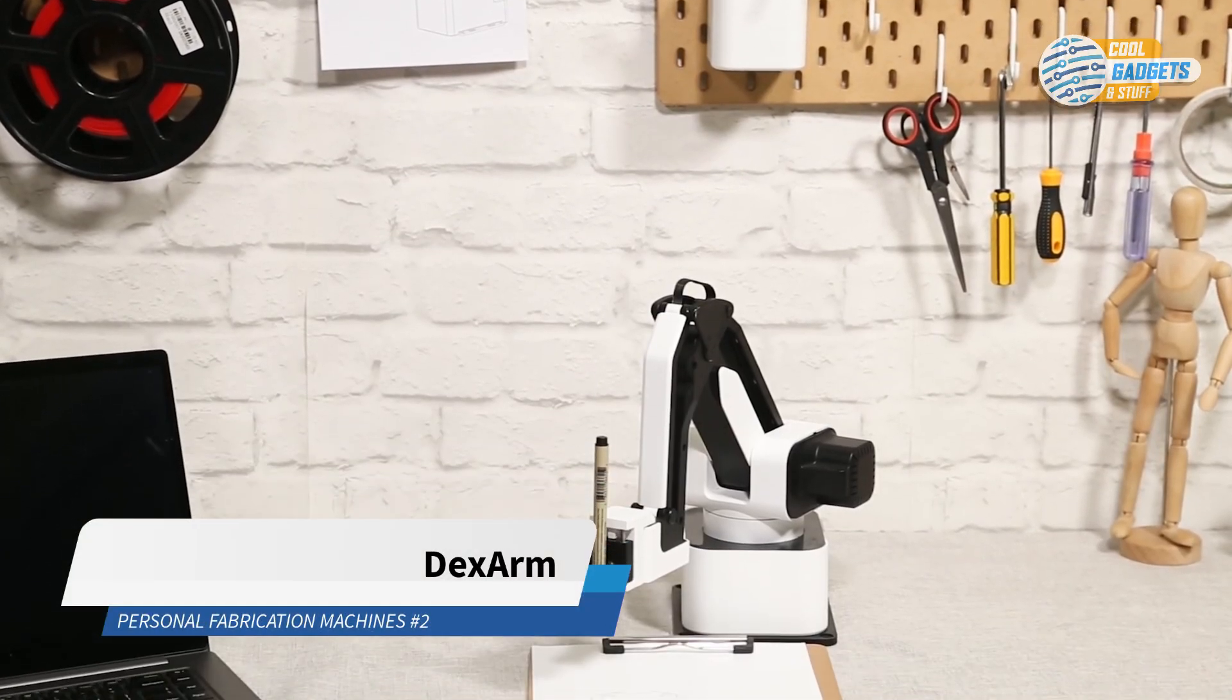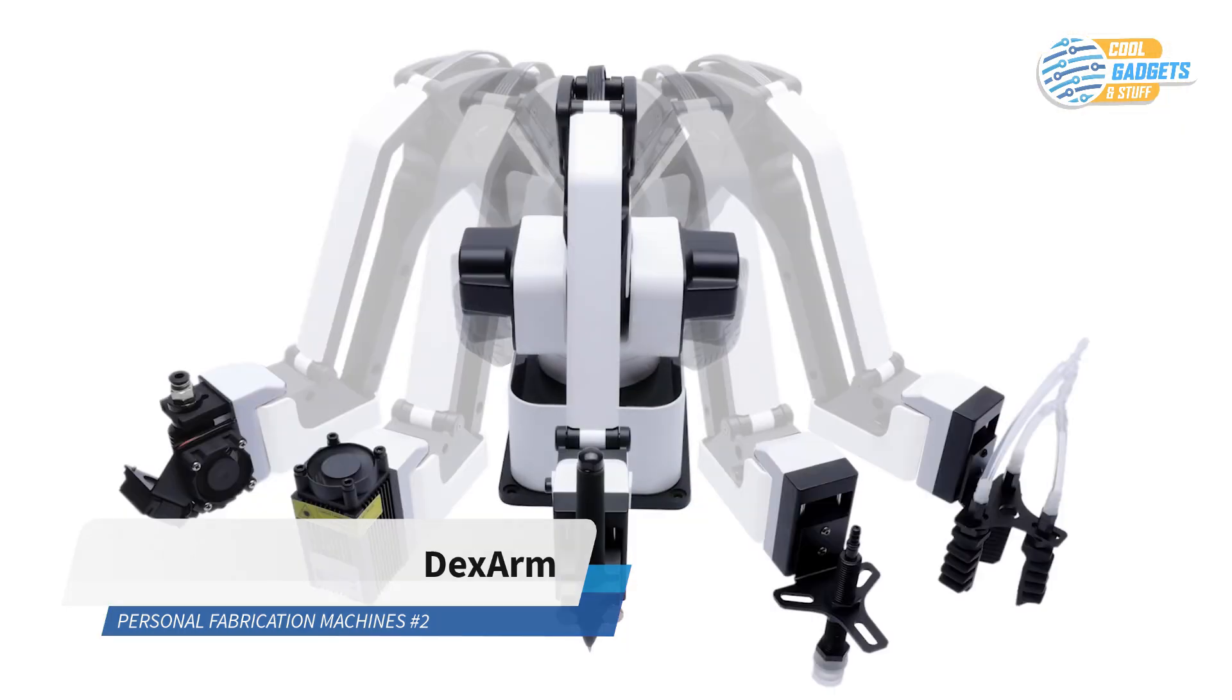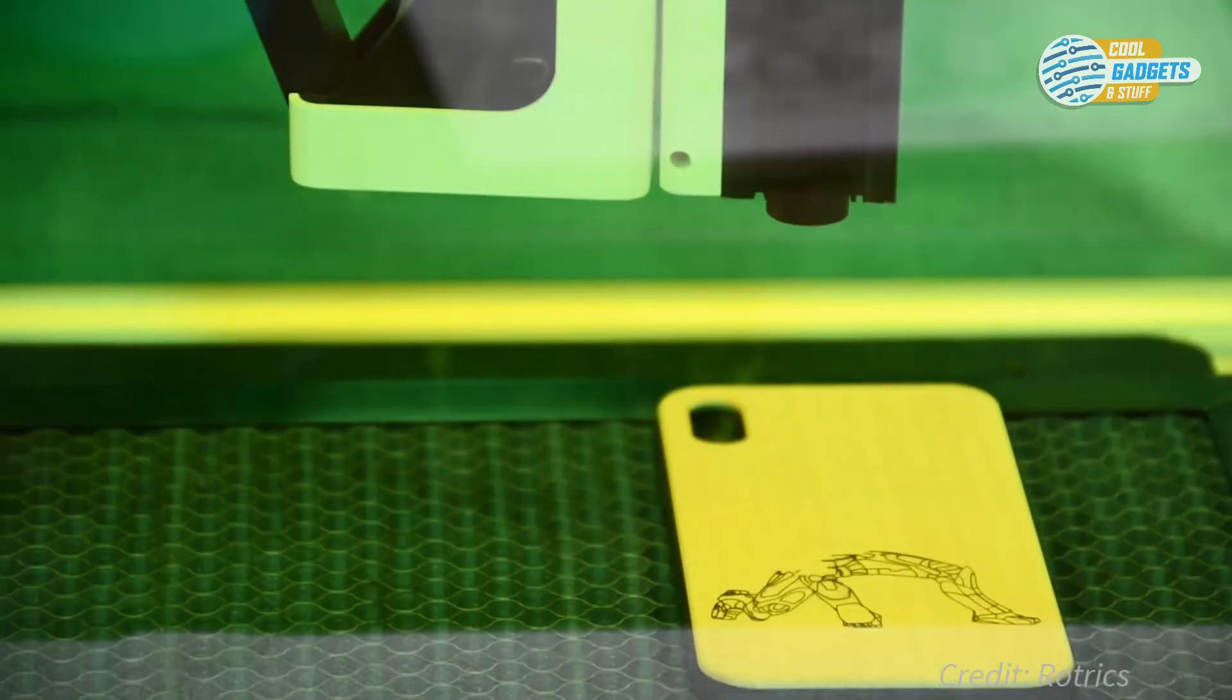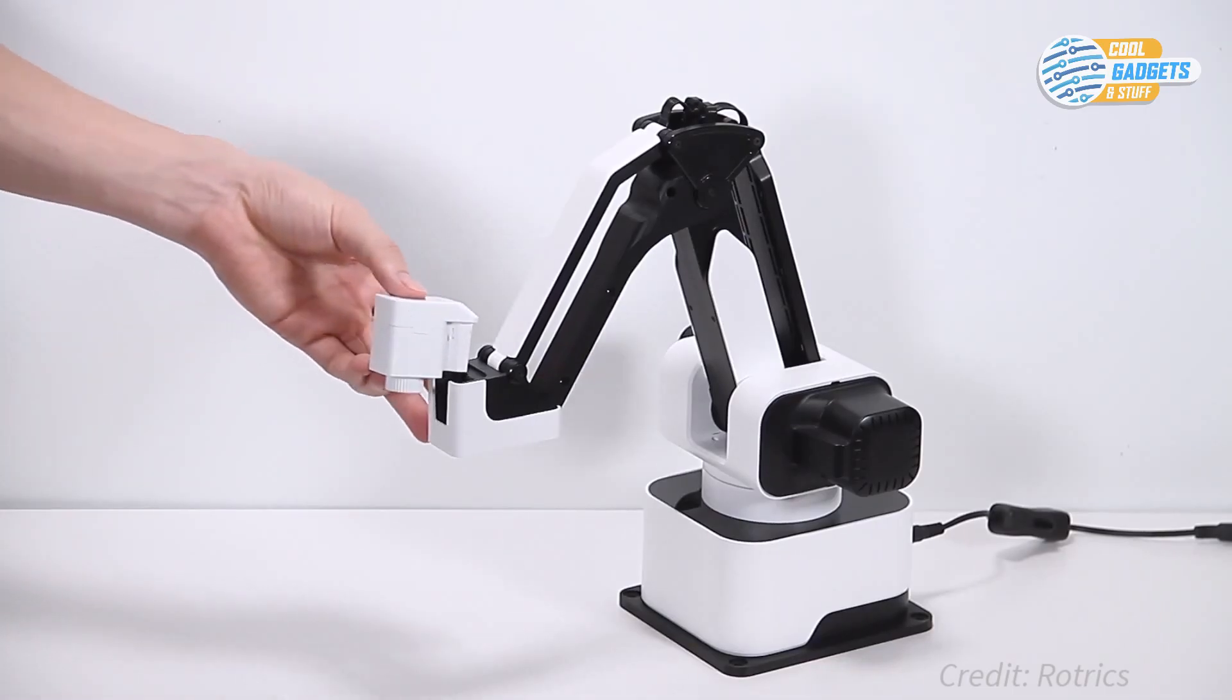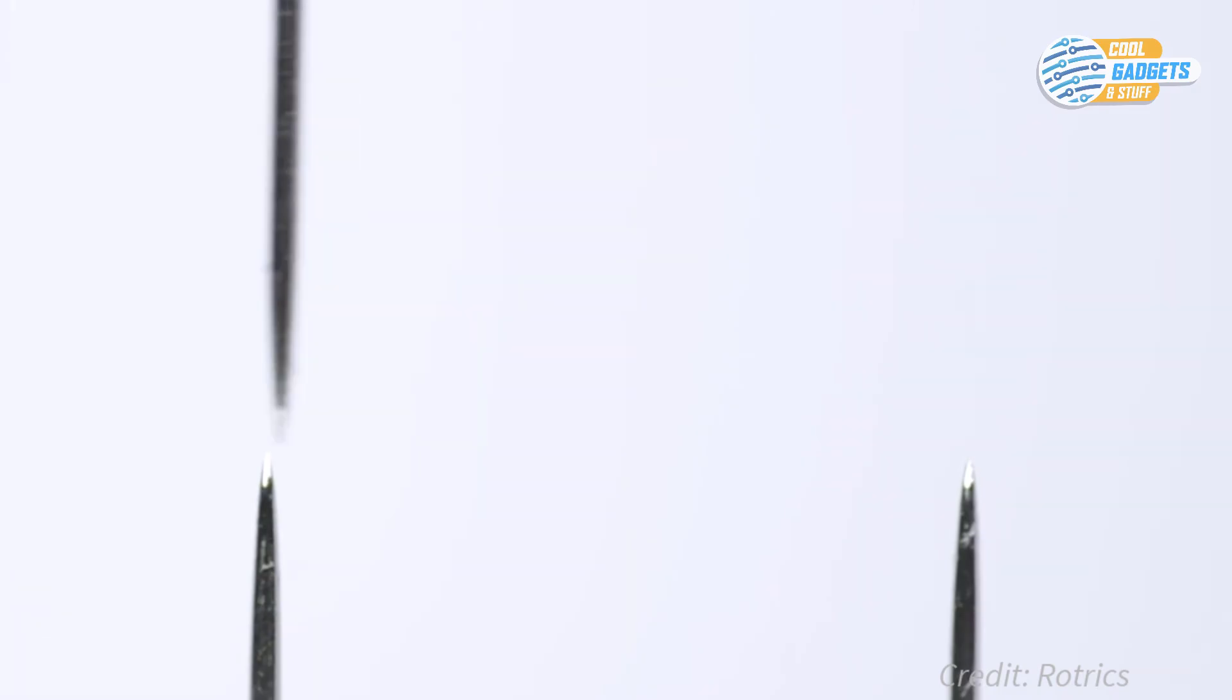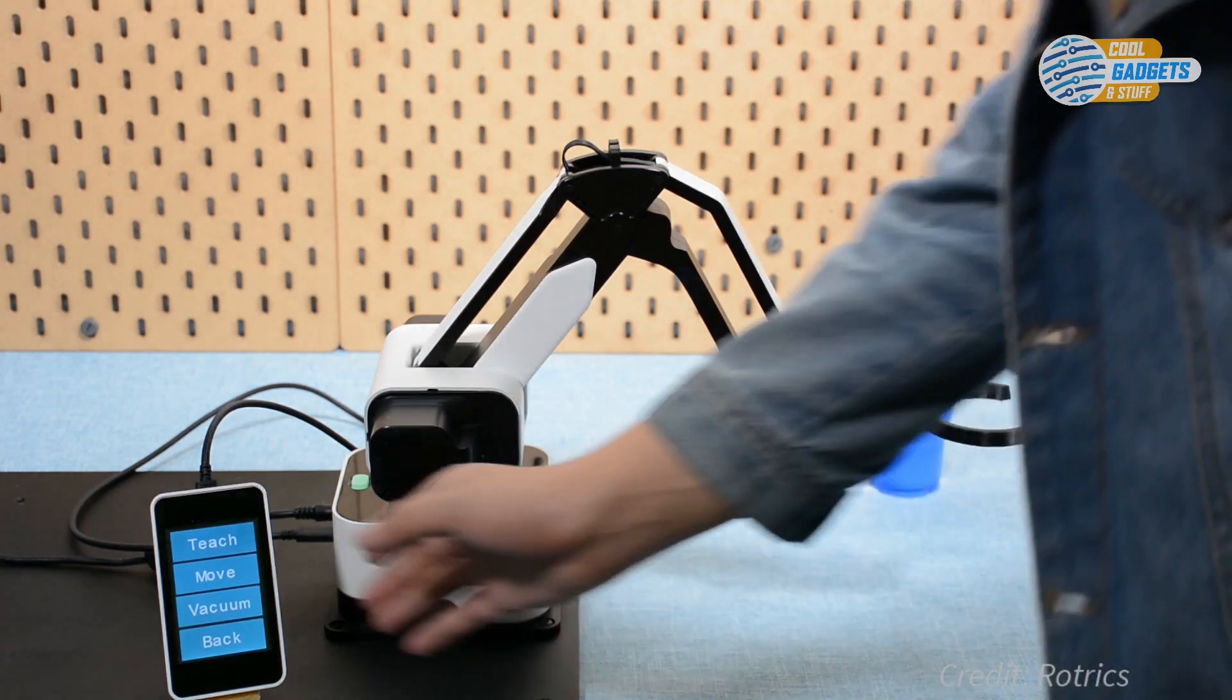DexArm by Rotrix is an all-in-one desktop robotic arm, with laser engraving, 3D printing, drawing, and gripping modules to help you bring your creative ideas to life. Every function is packed into a module that you can simply click on the end effector. DexArm has a high precision rate of 50 microns, up to 500 grams payload capacity, easy to use software, and a noiseless design so it won't bother you.